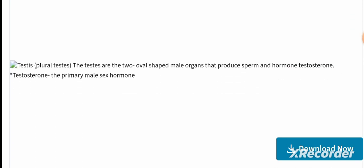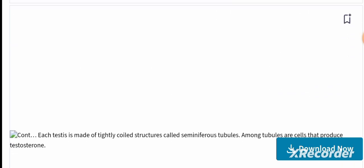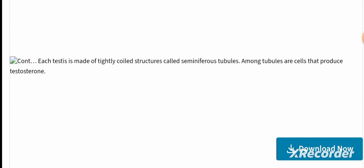The testes are the two oval-shaped male organs that produce sperm and the hormone testosterone, which is the primary male sex hormone. Each testis is made up of tightly coiled structures called seminiferous tubules. Among the tubules are the cells that produce testosterone.